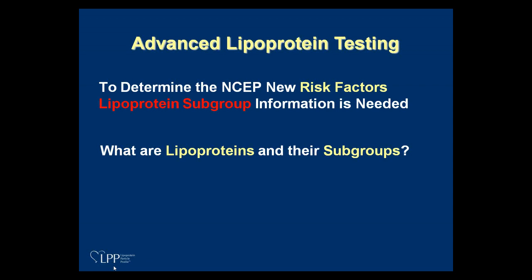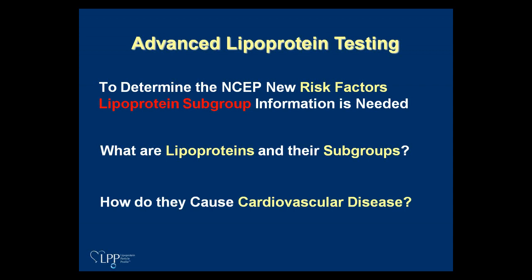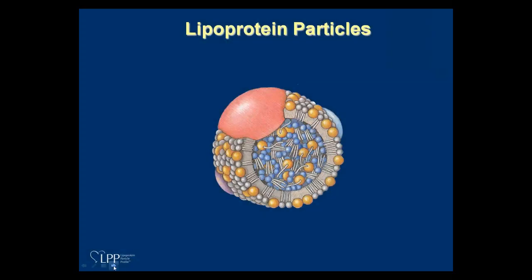In order to do advanced lipoprotein testing, we need to know lipoprotein subgroups. Lipoproteins are spherical particles with an apolipoprotein on them — either ApoA1 (for HDL) or ApoB100 (on every VLDL and LDL). On LP little a, there is an additional apolipoprotein attached. On the surface are phospholipids — nature's ingenious way of taking a blob of fat and allowing it to circulate in the aqueous bloodstream, with hydrophobic tails pointing inward and hydrophilic ends forming a shell.